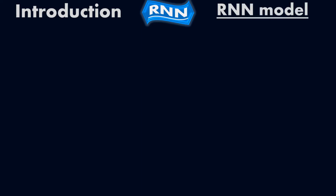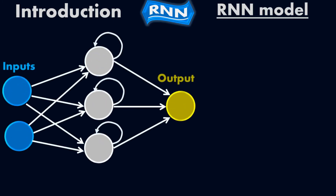Let me show you graphically how the RNN model looks like — the graphical perspective of the RNN. It is a simple neural network called the RNN model, as we just saw in the definition, that reconnects back the output to the same node. This is the input layer and this is the hidden layer.